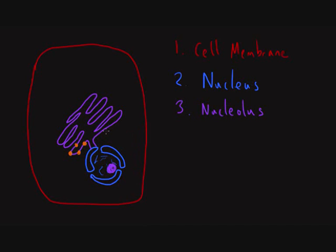One is called the rough endoplasmic reticulum, and one is called the smooth endoplasmic reticulum. And these little dots I'm just drawing on here are ribosomes. And ribosomes are structures made from RNA, and they're involved with protein synthesis.